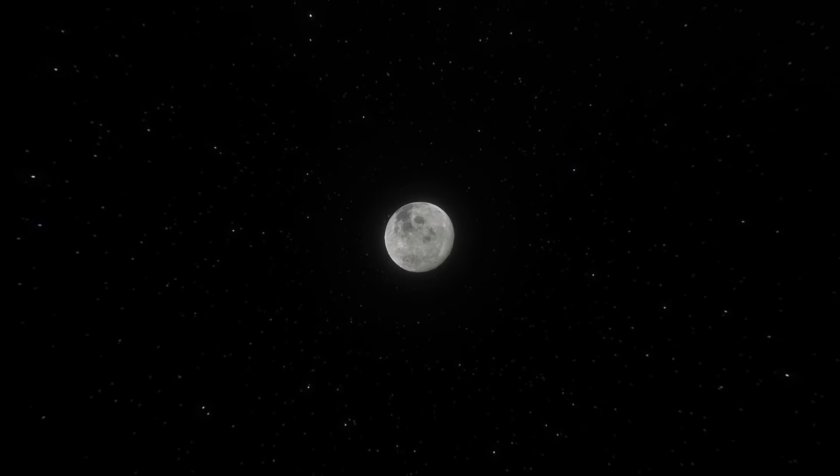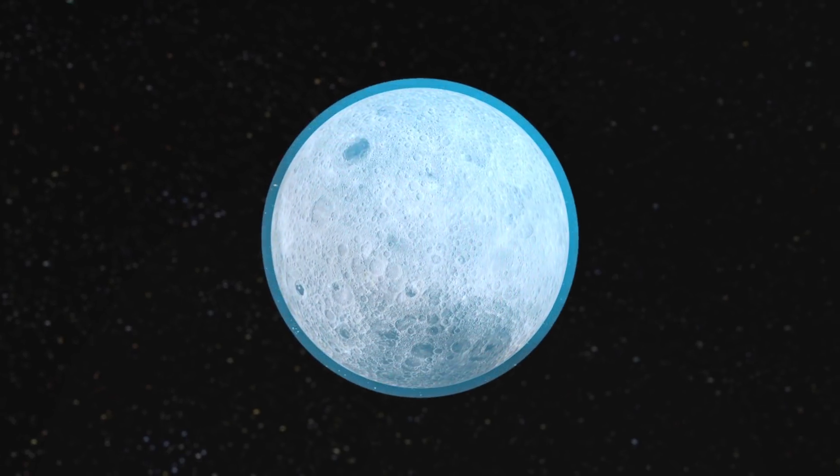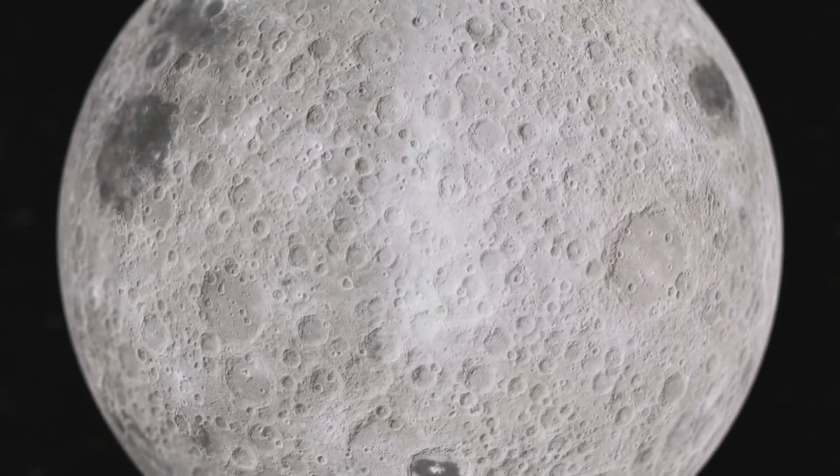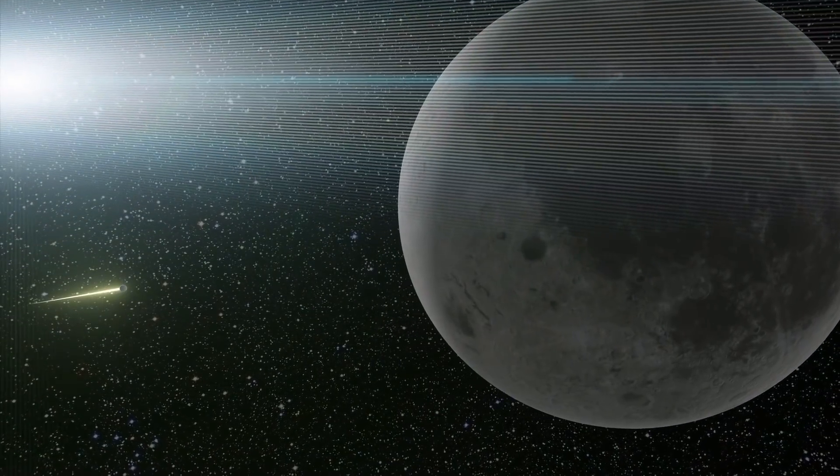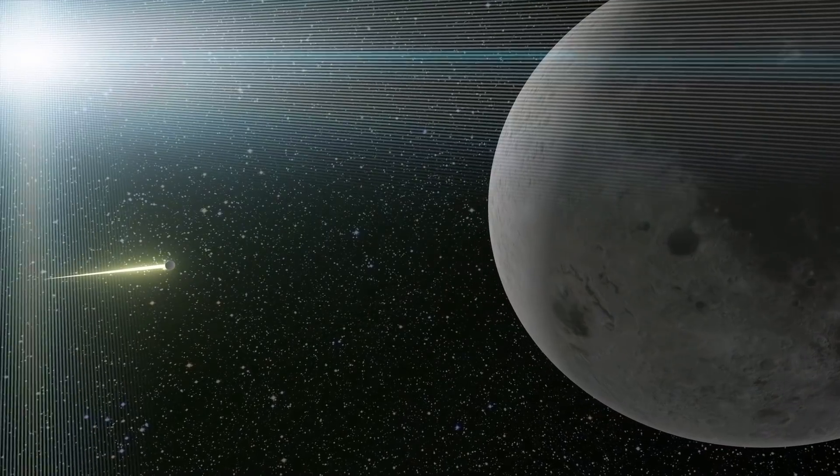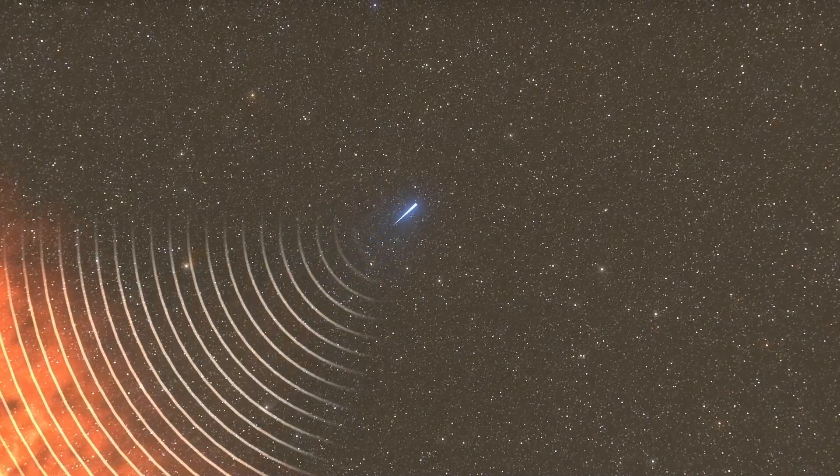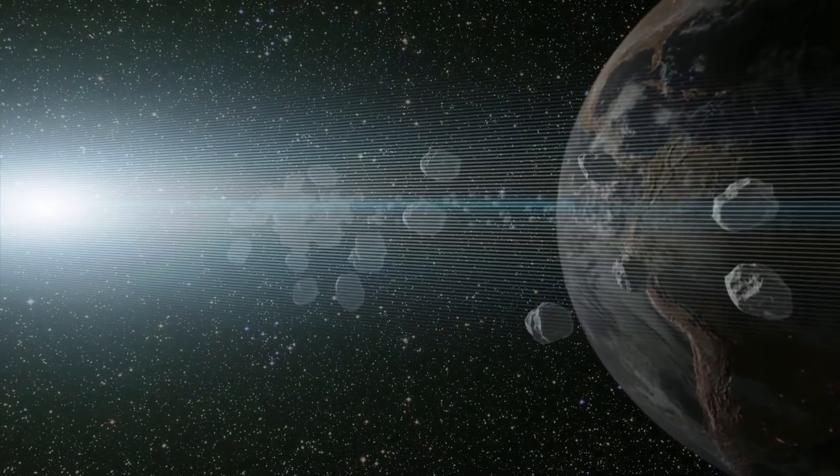But what if a cosmic body crashes into the Moon? Unlike our planet, it doesn't have a protective atmospheric layer and is much more vulnerable to being hit. I recently considered a hypothetical situation. What if a tiny golf ball hit it at close to the speed of light? If you haven't seen it, click the video on the screen and share your opinion in the comments.